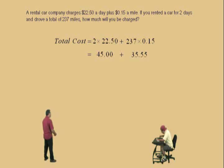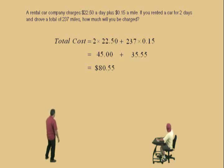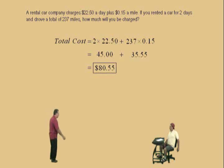All right, Charlie. Now, what's 45 dollars plus 35 dollars and 55 cents? 80 dollars and 55 cents. That's your total amount. That's how much you're going to be charged. All right, Charlie. You got that one. Let's do another one. Here we go, Charlie.